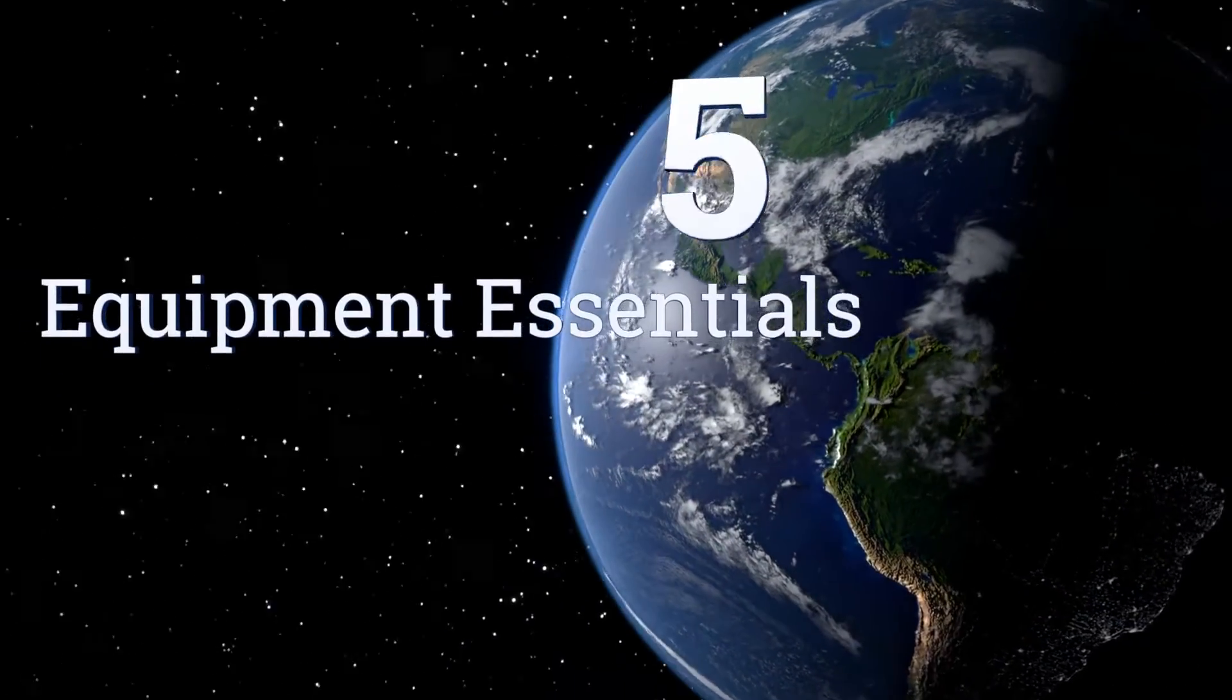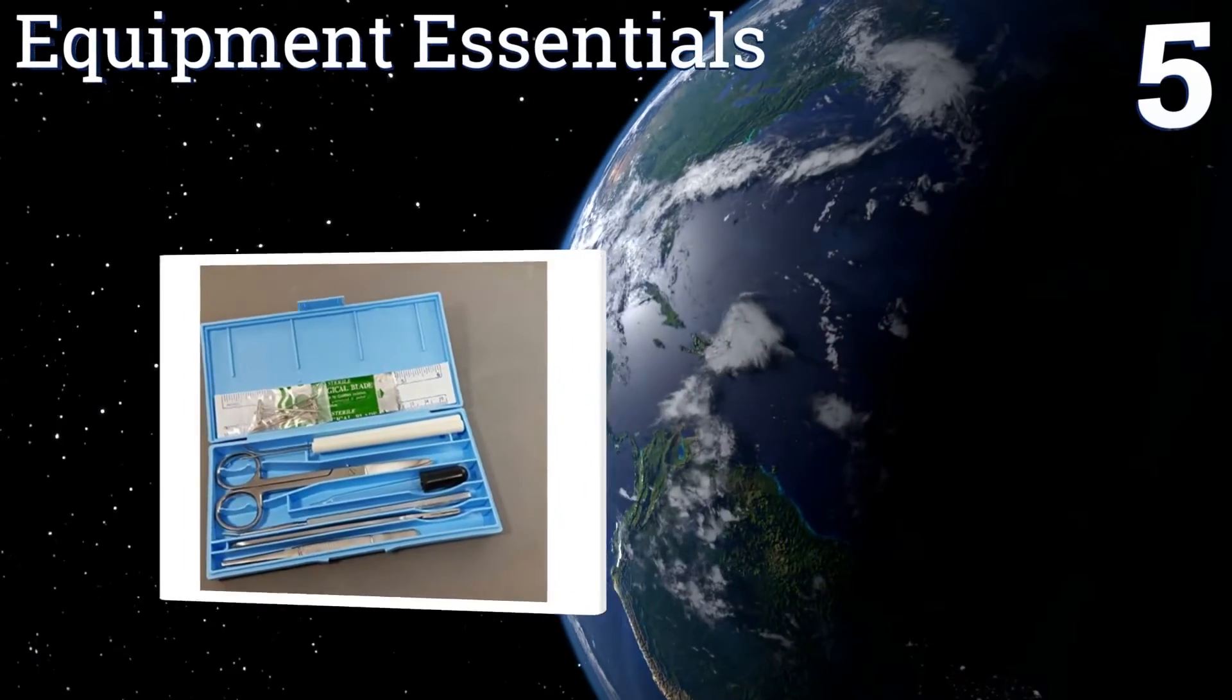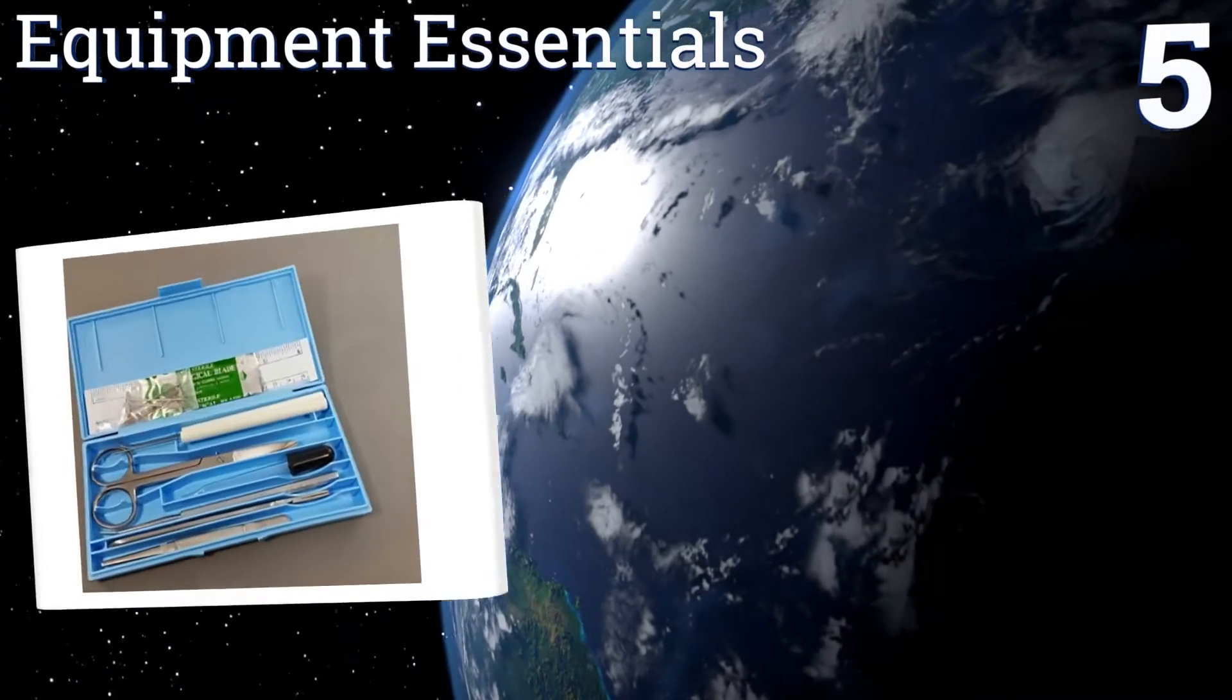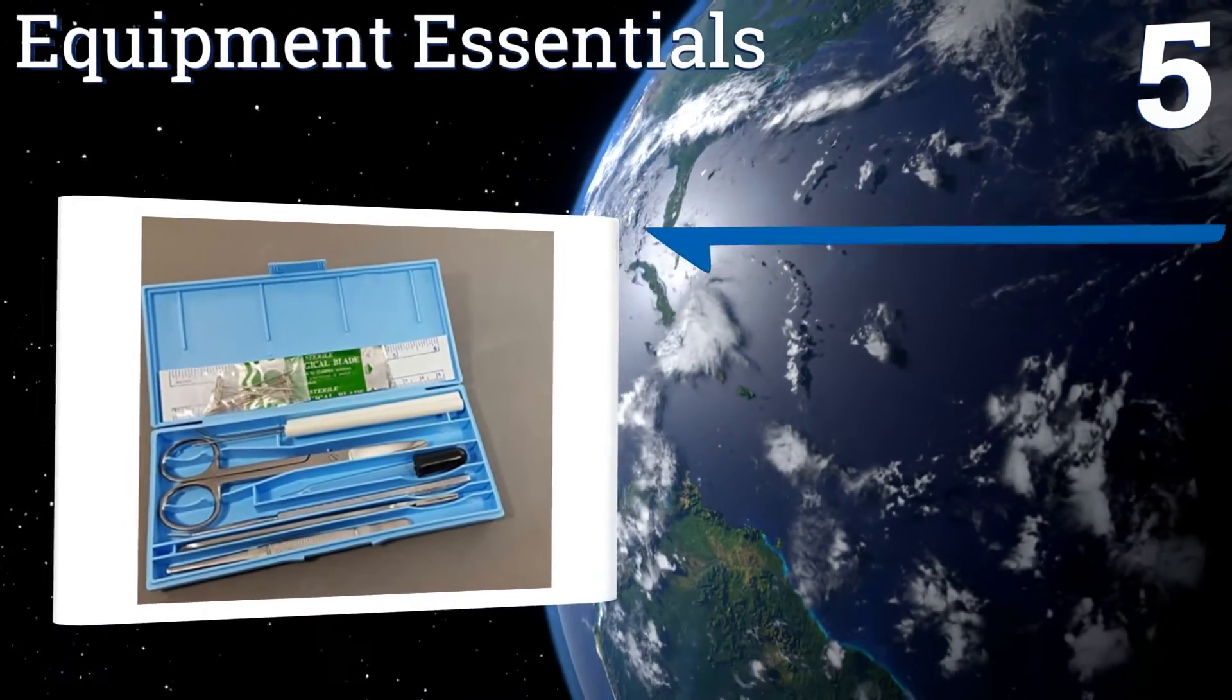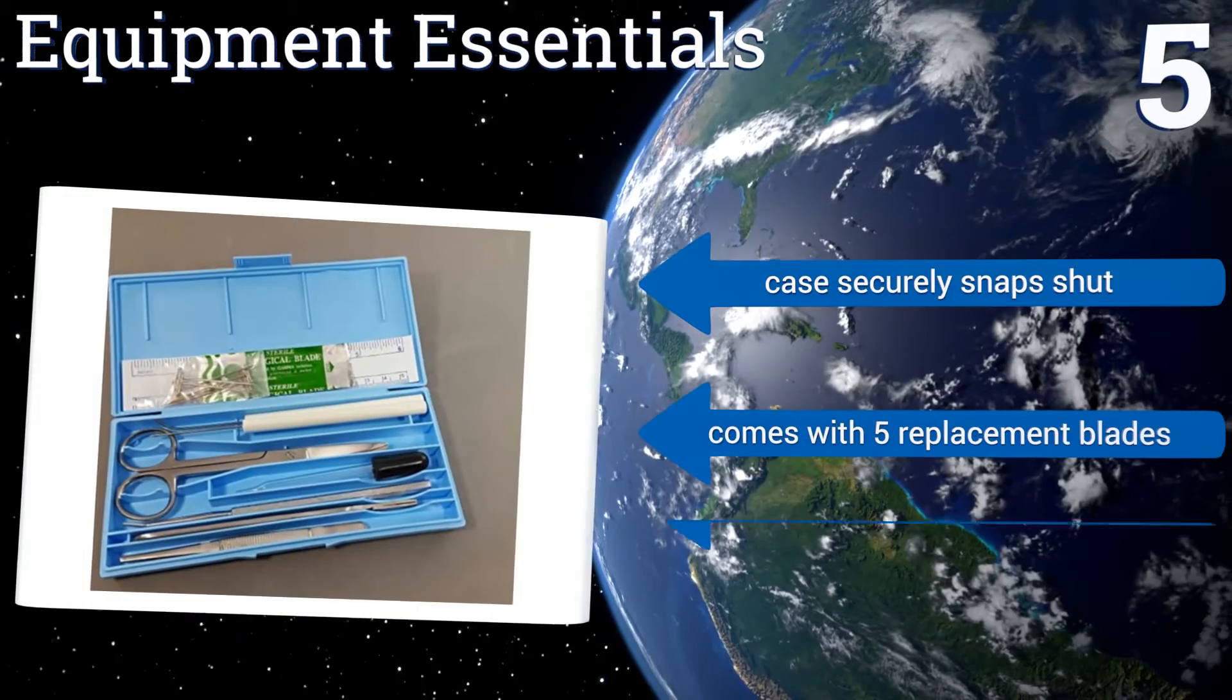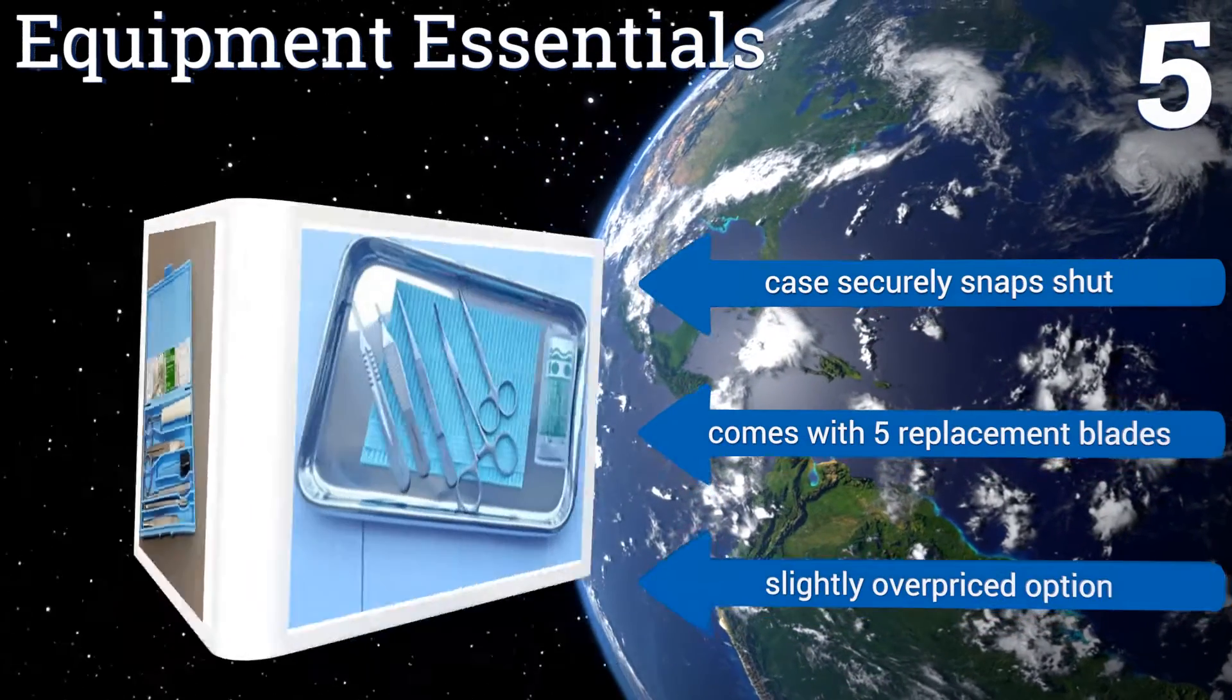Coming in at number 5 on our list. Unlike most dissection kits that come with soft zippered cases, the Equipment Essentials set is housed in a hard-walled plastic case. That helps protect the included tools during travel or protracted storage, making this a fine choice for infrequent classroom use.